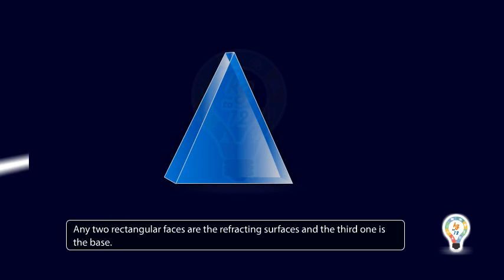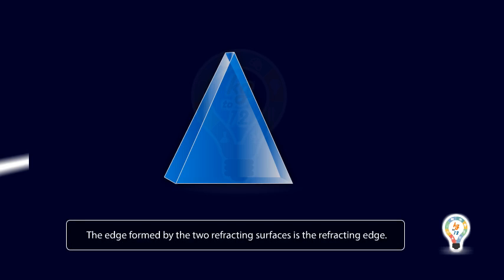Any two rectangular faces are the refracting surfaces and the third one is the base. The angle between the refracting surfaces is the angle of the prism or refracting angle. The edge formed by the two refracting surfaces is the refracting edge.